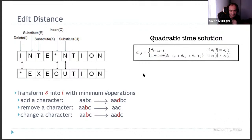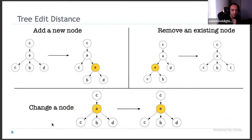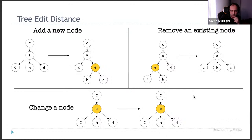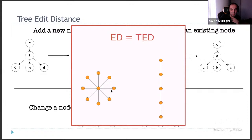Now, what about tree edit distance? We have two rooted trees where every node has a label, and we want to transform the first into the second. The basic operations are node addition, node removal, and label substitution. If the trees are a star or a path, the problem is exactly equivalent to edit distance, but in many cases the structure is more complicated, so you'd expect the problem to be harder.